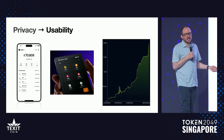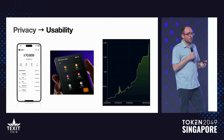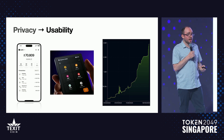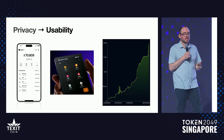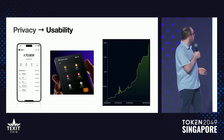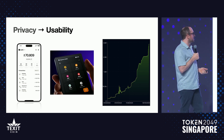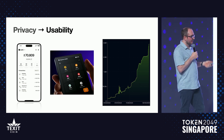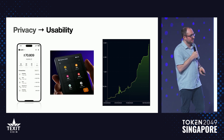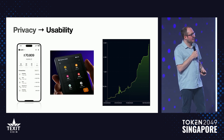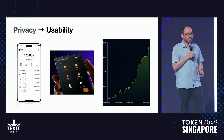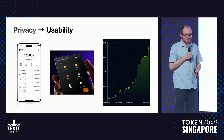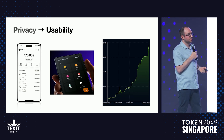With privacy nailed down, we focused on usability. We have a fantastic wallet called Zashi, built by cryptographers and privacy experts, incorporating all of our privacy-conscious design decisions. It's really easy to use and stable, with new features all the time. The amount of coins in the Zcash shielded pool — where all the encrypted money lives — has been getting a lot of attention lately. We also have hardware wallet support, with Ledger adding support soon, so we're making a lot of progress on usability.